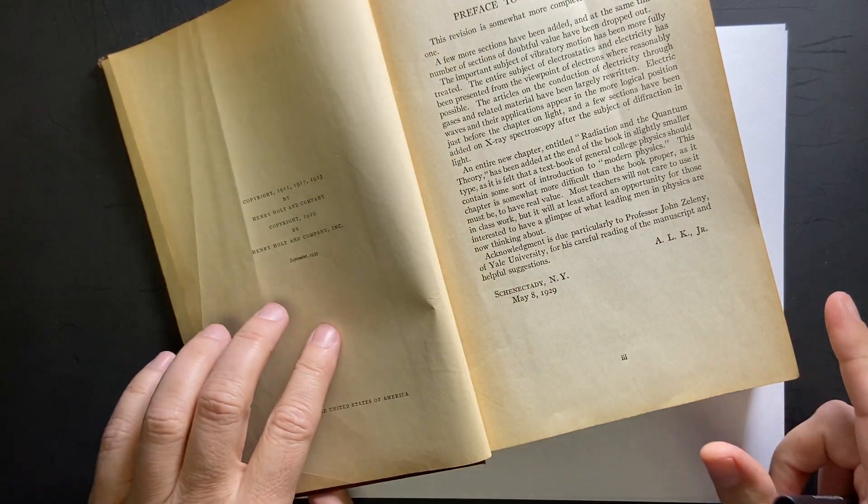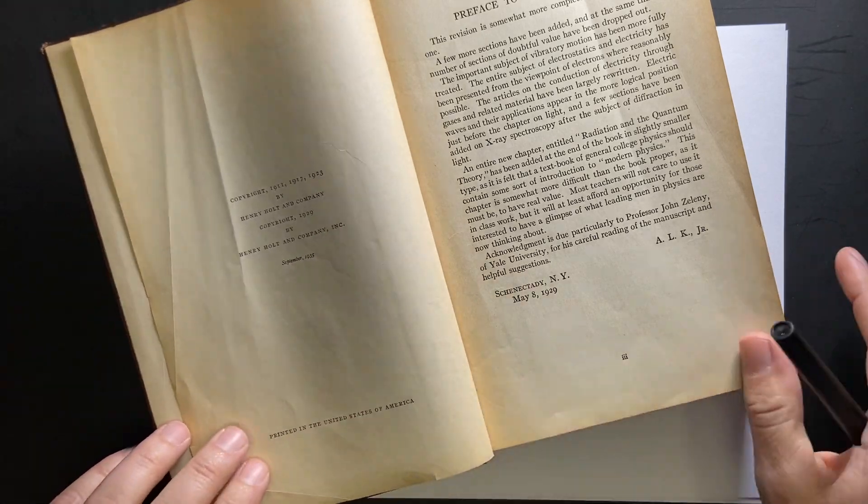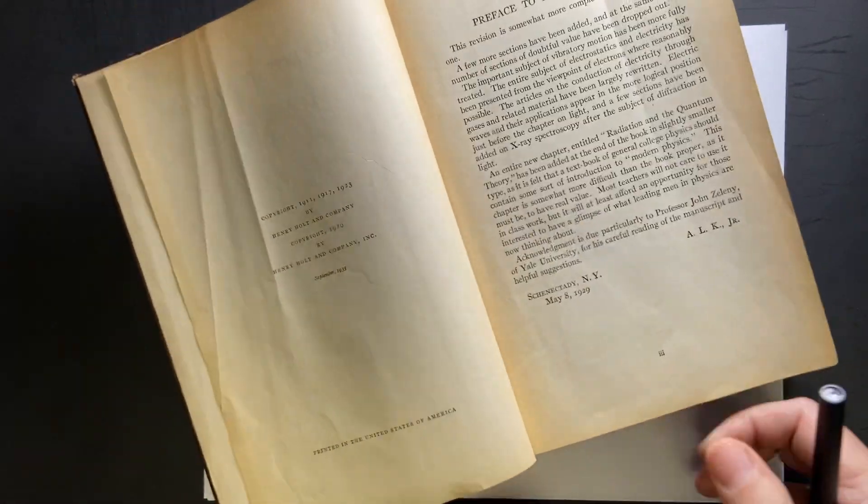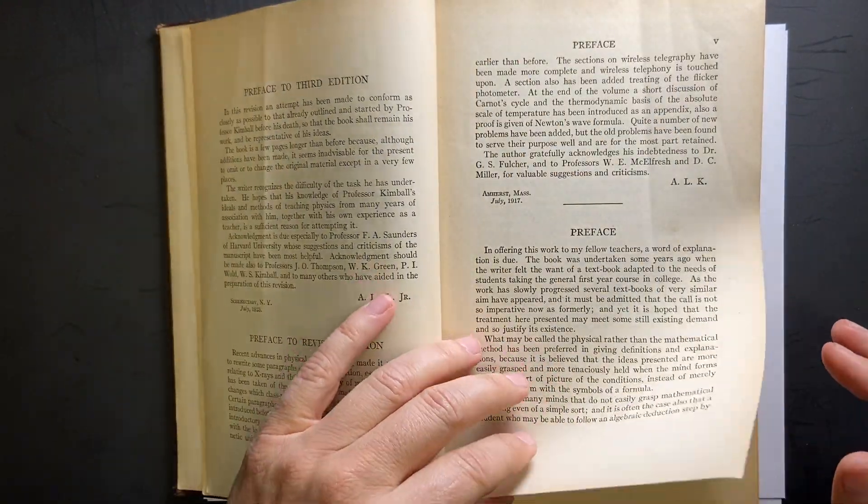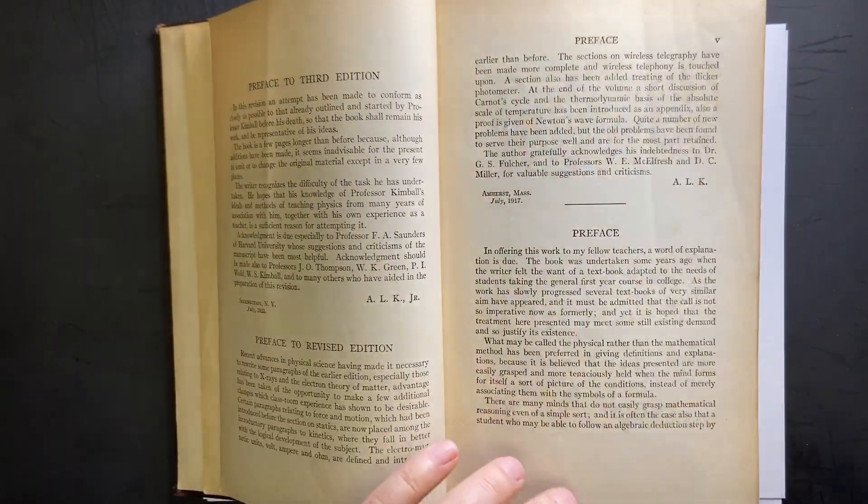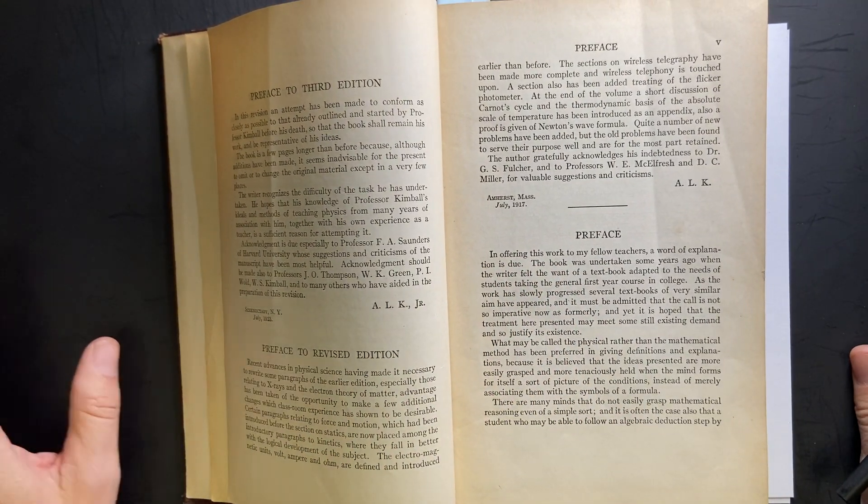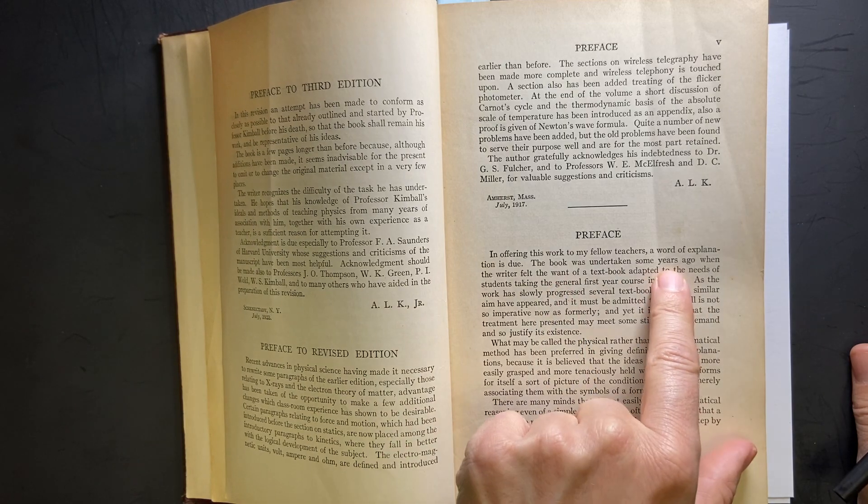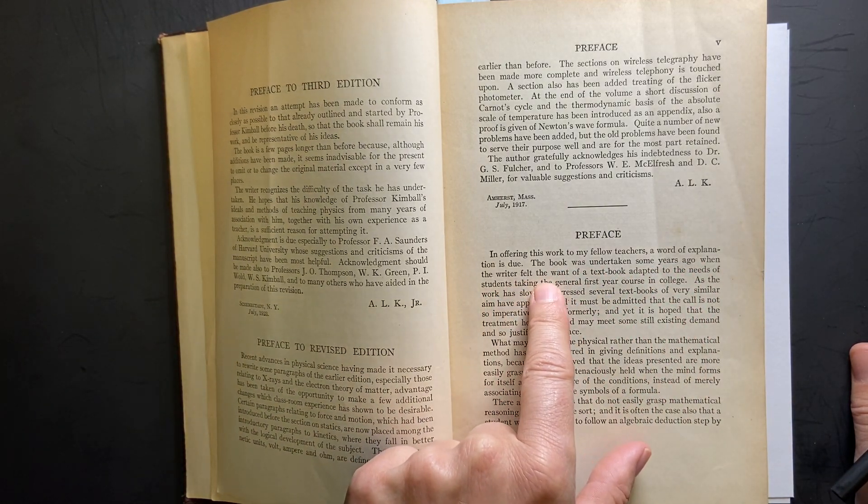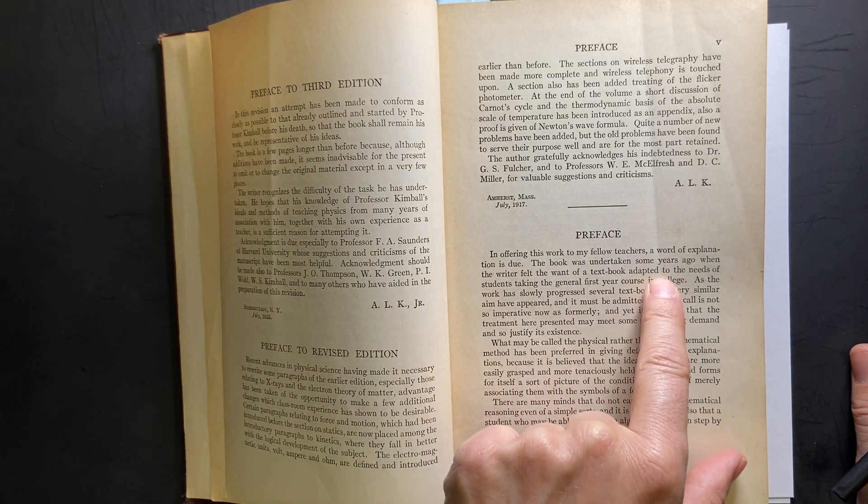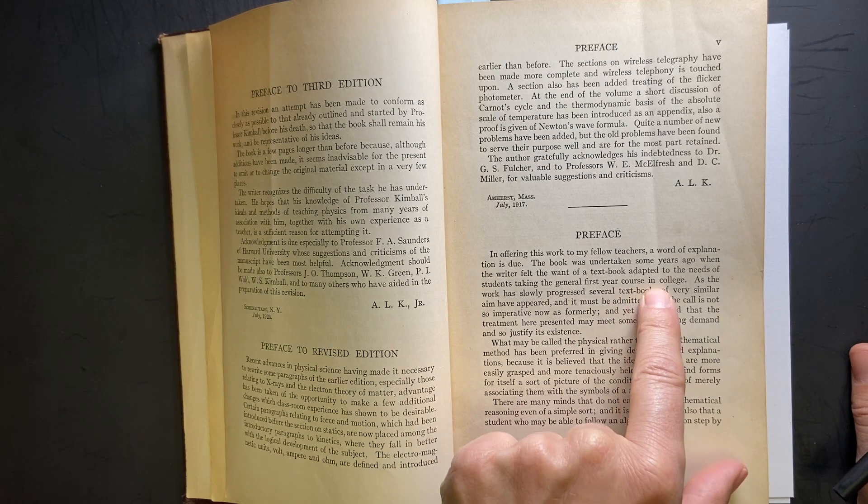I do want to point out one thing. This says 1935, okay? Now, let me move this. So, if you look back here to the preface, the very first one, in offering this work to my fellow teachers, the book was undertaken some years ago when the writer felt that the want of a textbook adapted to the needs of students taking the general first year course in college.